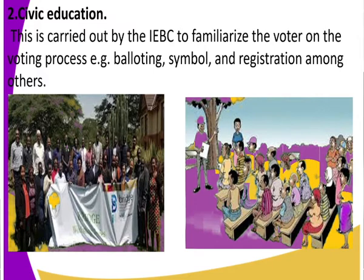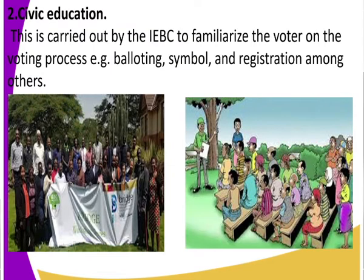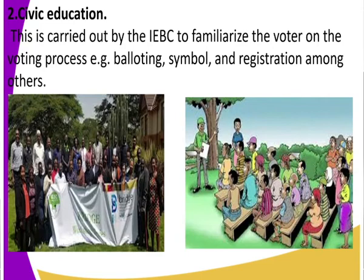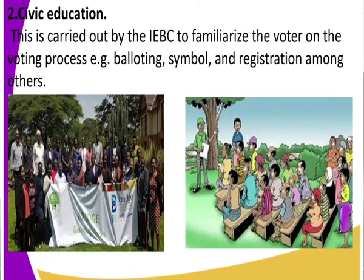From civic education we get to move to actual voting, but that is a subtopic to look at in the coming days. So today we have looked at two stages: one, registration as a voter; and two, civic education. Those are the two stages we covered for the electoral process today, but there are other stages we will be learning as we progress.